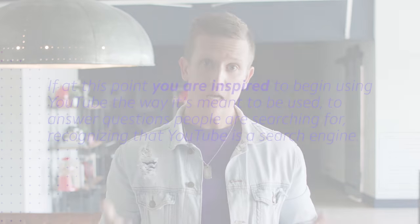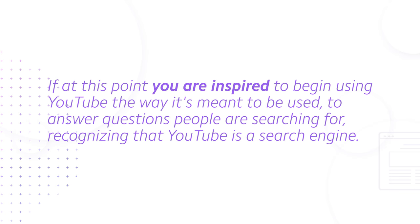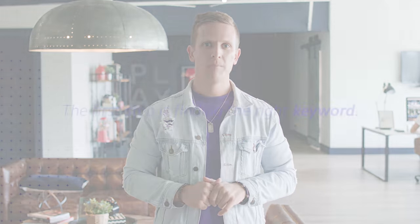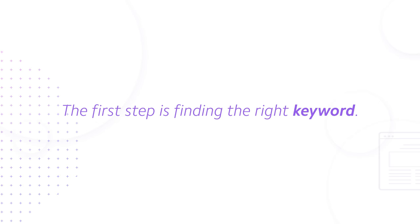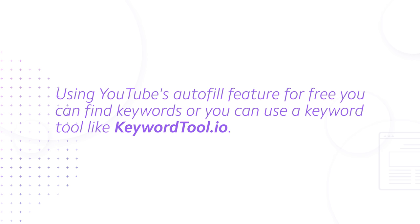So with all that being said, if at this point you are inspired to begin using YouTube the way it's meant to be used — to answer questions that people are searching for, recognizing that YouTube is a search engine — I want to show you the anatomy of a video that ranks on the first page of YouTube search results. The first step, like we said, is finding the right keyword. Using YouTube's autofill feature for free, you can find keywords, or you can use a tool like keywordtool.io. Look for keywords with a search volume between 1,000 and 100,000, and the lower the competition, the better.